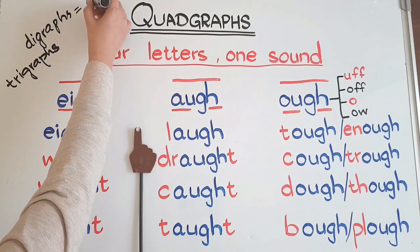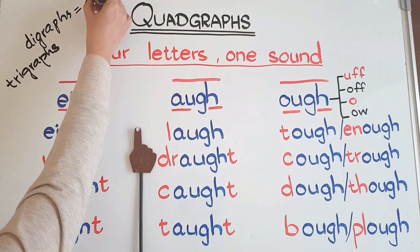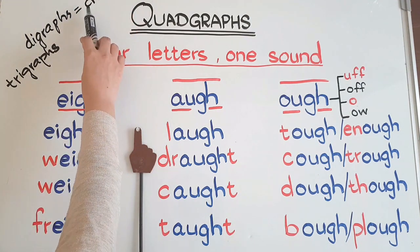Digraphs are two different sounds that combine and make one new sound, like C and H.